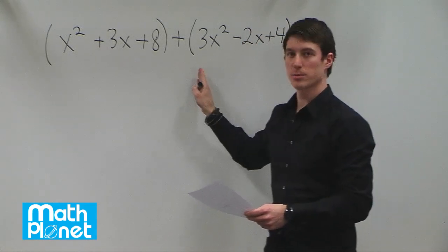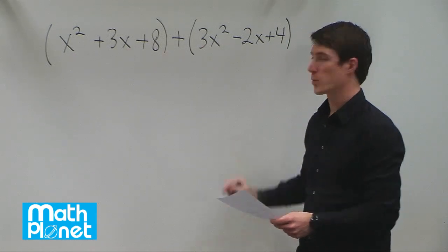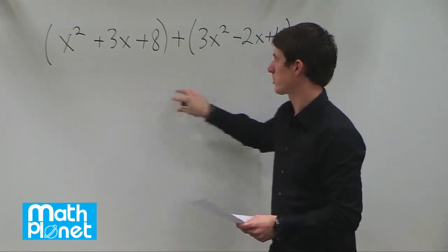So we have x squared terms, we have cross terms or just x terms, and we have number terms. So we can add each of those like terms together and then we'll have three terms in our final answer.